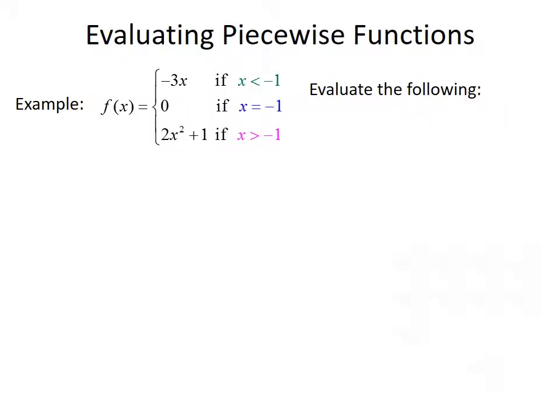Let's talk about evaluating piecewise functions. We're given the piecewise function f of x equals negative 3x if x is less than negative 1; 0 if x equals negative 1; and 2x squared plus 1 if x is greater than negative 1. The important thing is we need to make sure that when evaluating the function, we use the formula that corresponds with where our point exists. So to evaluate f of negative 2, we determine that negative 2 is less than negative 1, so we use the first formula.